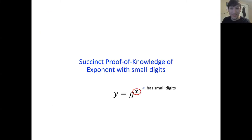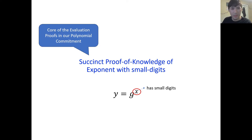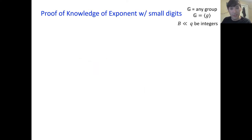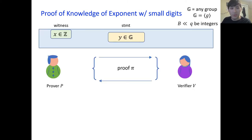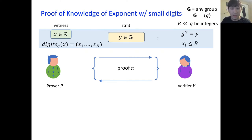Thank you very much Pratik. Hello everybody, I'm Alex Block, and I will begin by describing a protocol which is a succinct proof of knowledge of exponent with small digits. This protocol is the core of our polynomial commitment scheme. To begin, let's fix a cyclic group G, integers B and Q. Our proof of knowledge of exponent with small digits: the public statement is some group element Y, and the prover is given an integer witness X. The protocol certifies that X is a witness to Y, so that G to the X equals Y, and that the base Q representation of X has small digits bounded by B.